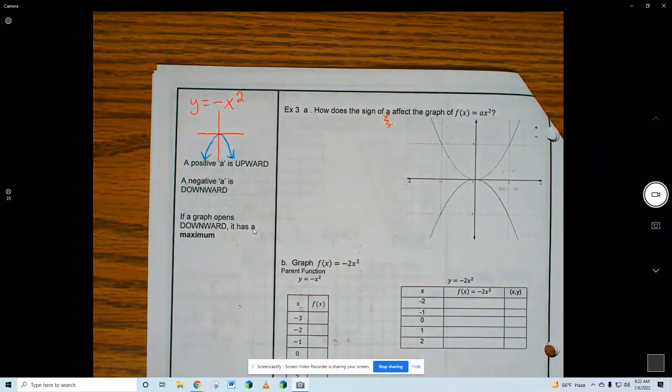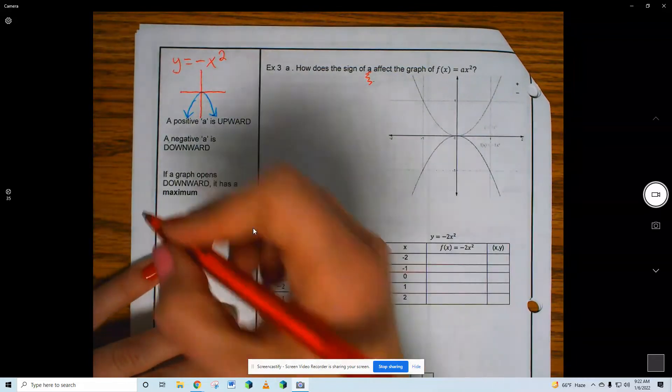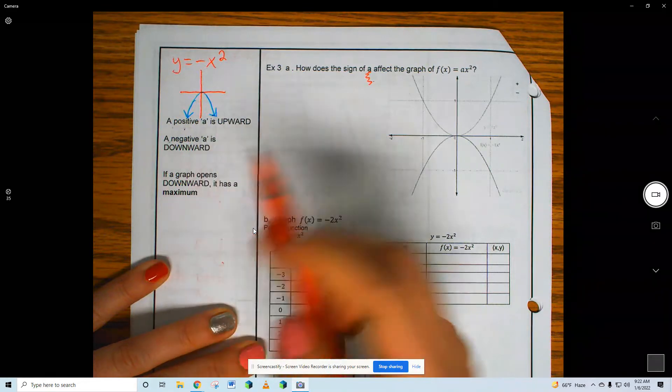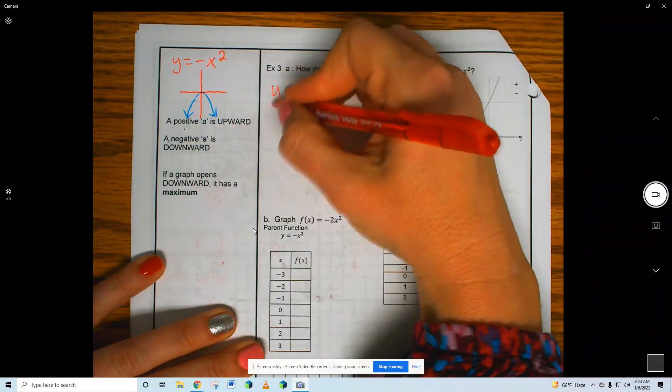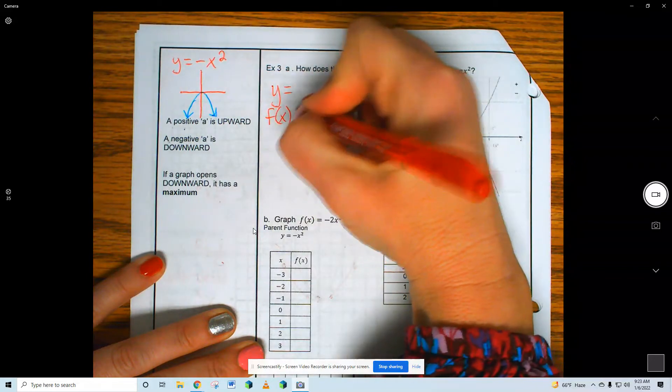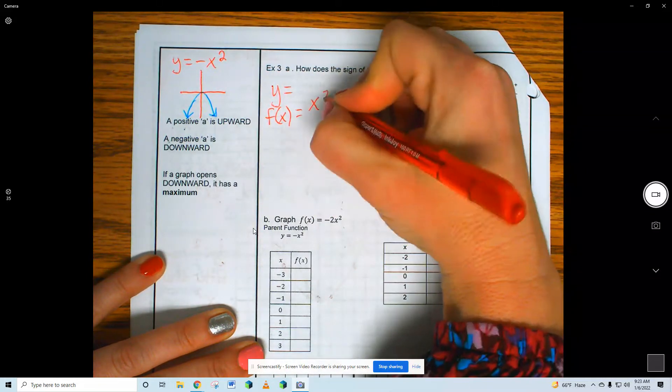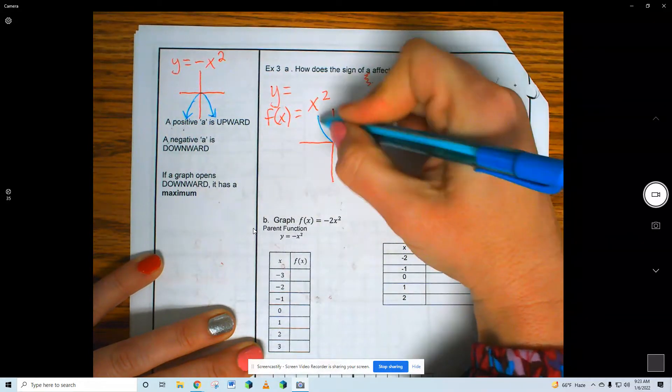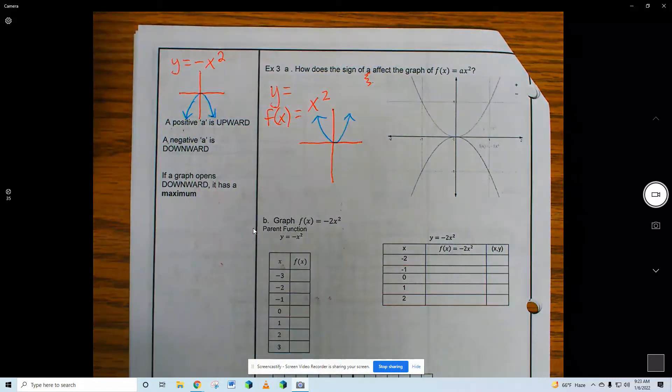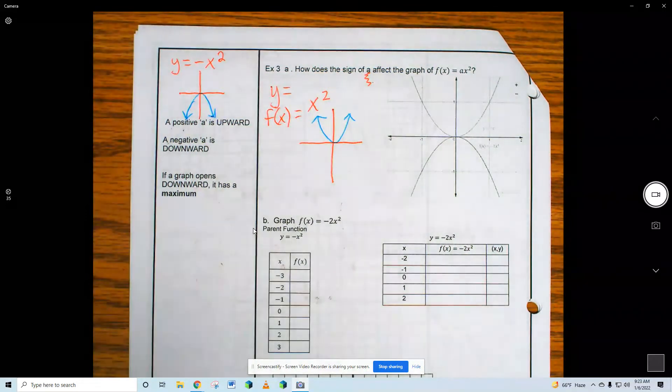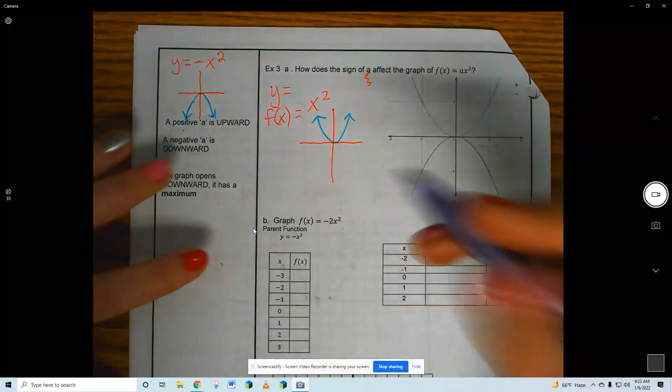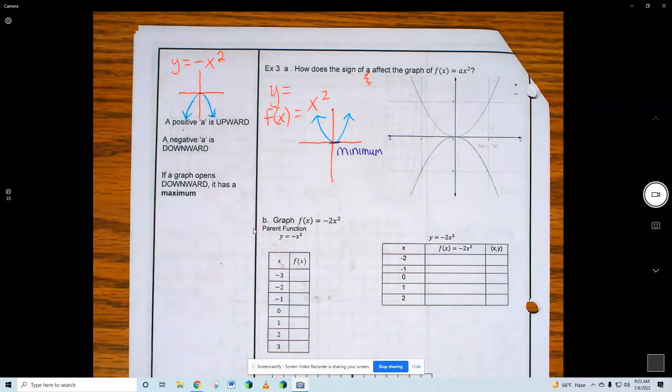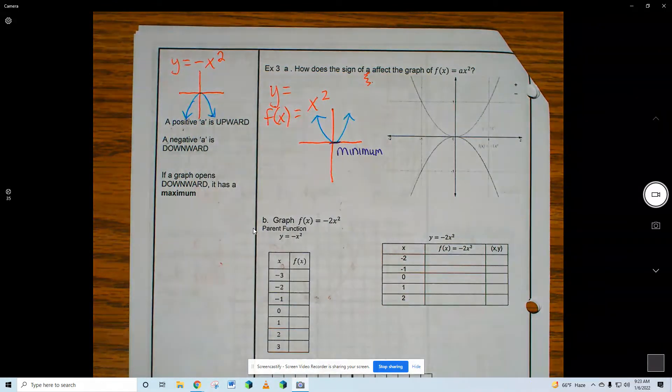Remember, I can use Y equals or I can use F of X equals. If a positive A is upward, so normal Y equals or F of X equals positive X squared, that's upward. If a graph faces upward like we talked about yesterday, it has a minimum point. See, it bottoms out. See, it has a low point. That's a minimum. Do you guys know that minimum means like a low something?